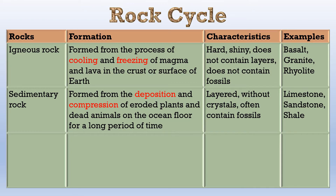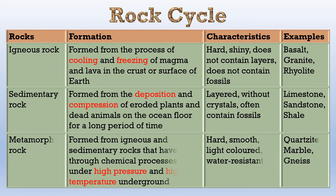Finally, let us look at the metamorphic rocks. Metamorphic rocks are formed from igneous and sedimentary rocks that have gone through chemical processes, which is metamorphism, under high pressure and high temperature underground. Due to the metamorphism process, they will form extremely hard, smooth, light-coloured and water-resistant stones. Examples of metamorphic rocks are quartzite, marble and gneiss.